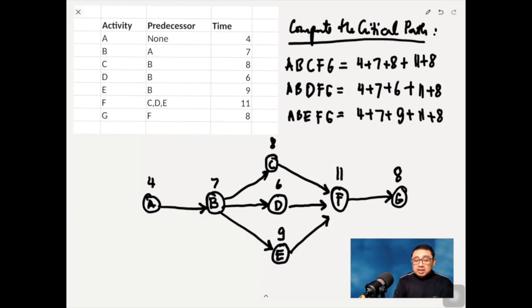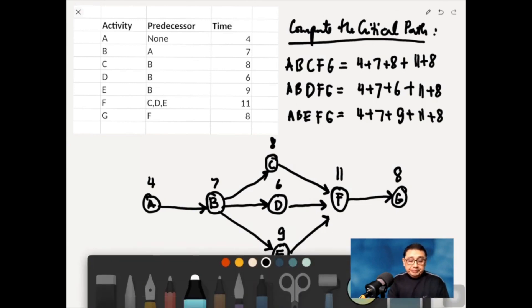Now say if you try to total these three. So this one is A, B, C, F, G. That's 11, plus 8. So this one is 19, plus 11. That's 30. This one is 38.